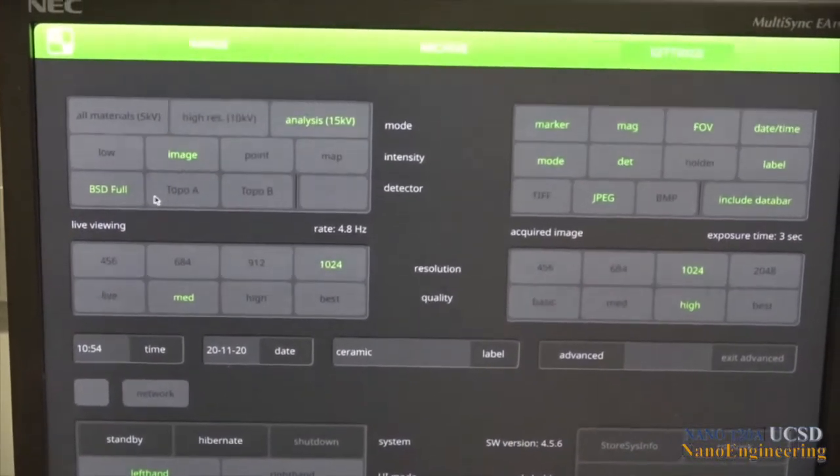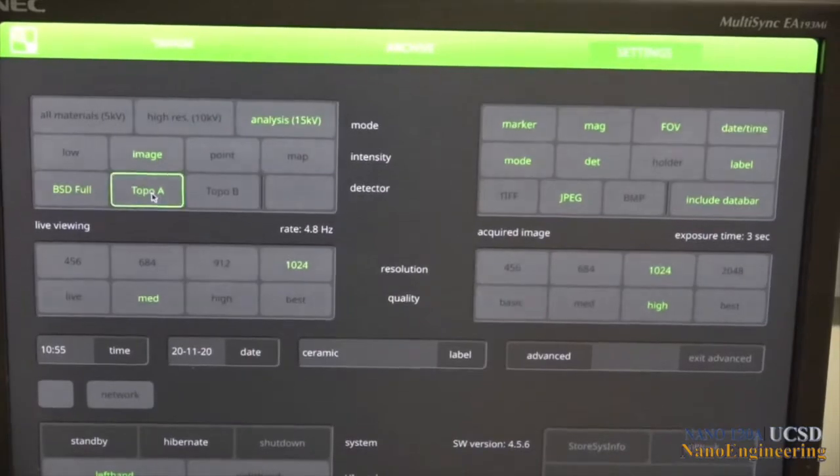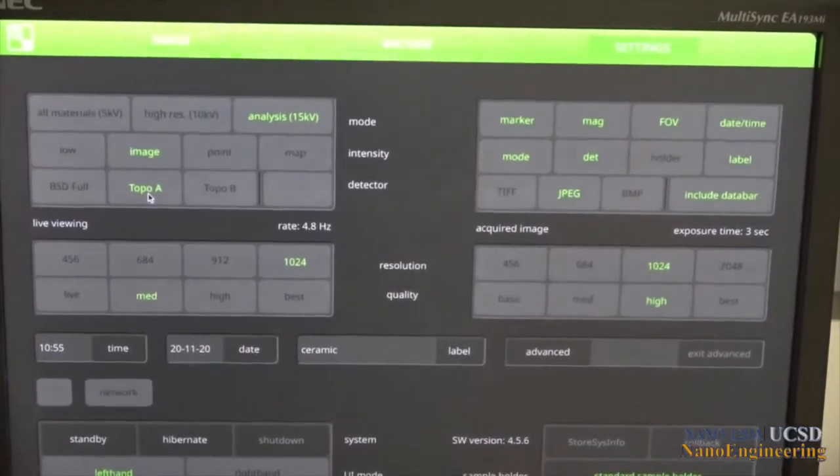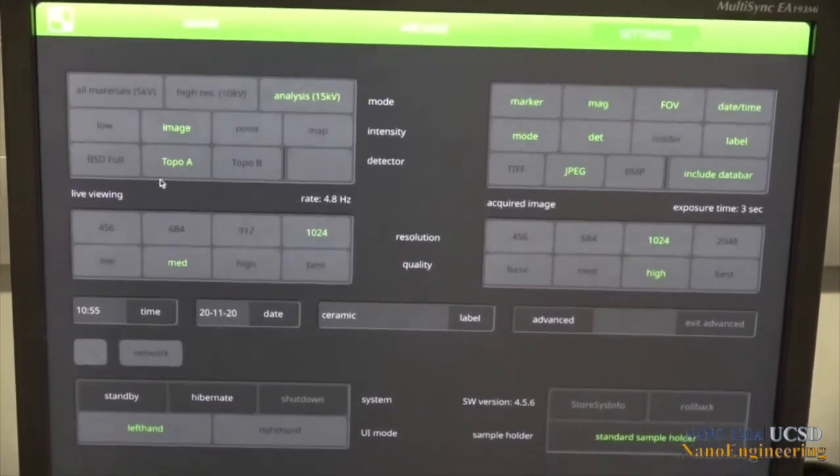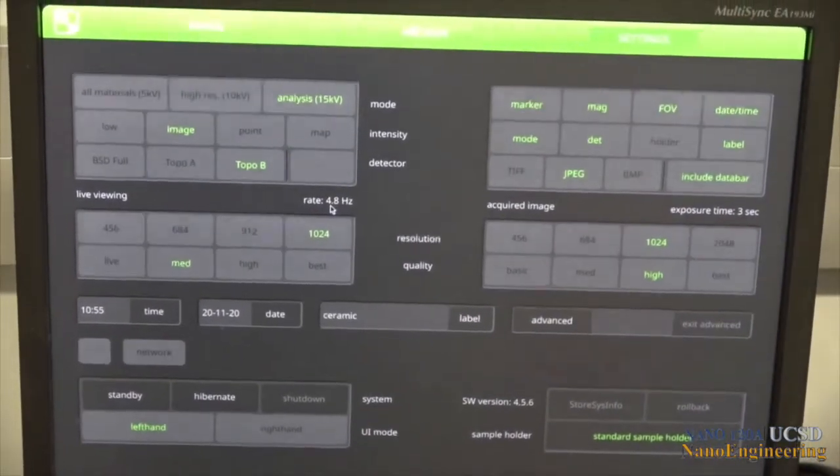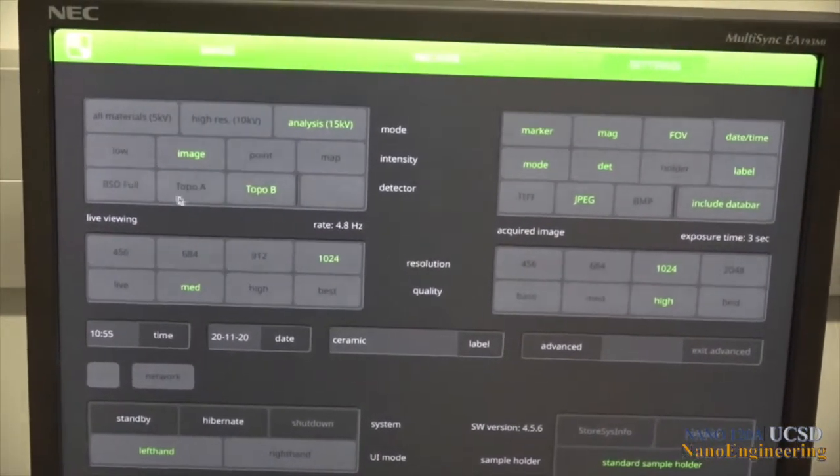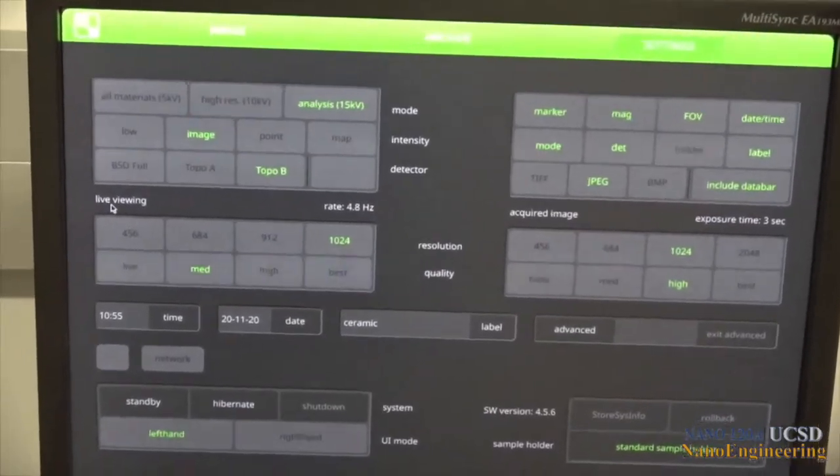The detectors menu allows us to choose the mode of operation for our backscatter electron detector. BSD full has all segments on and provides good atomic number contrast. The topo A and topo B modes turn various segments of the detector on or off to provide topographic contrast.